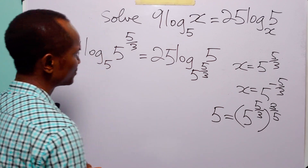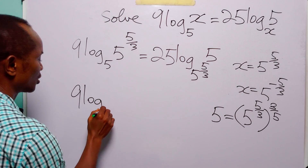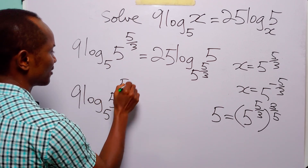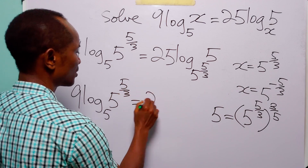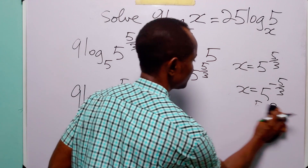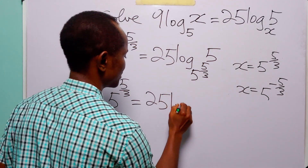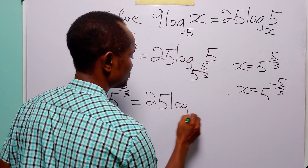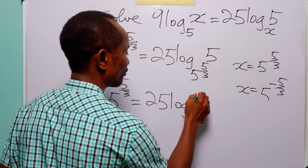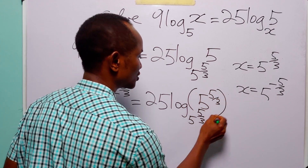So when we do that, we have: 9 × log base 5 of 5^(5/3) = 25 × log base (5^(5/3)) of (5^(5/3))^(3/5).